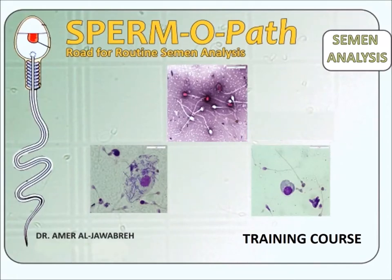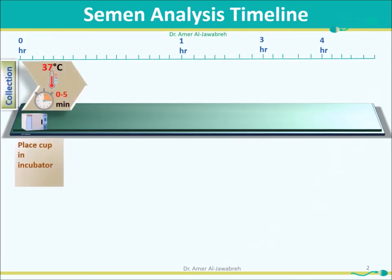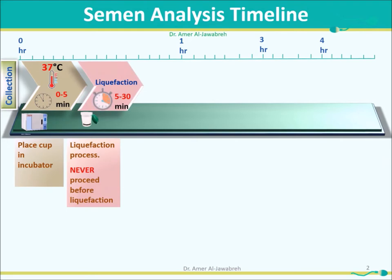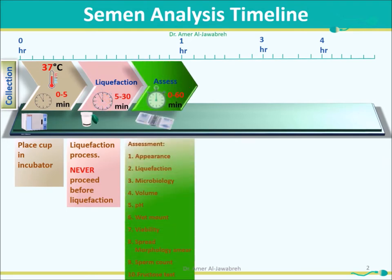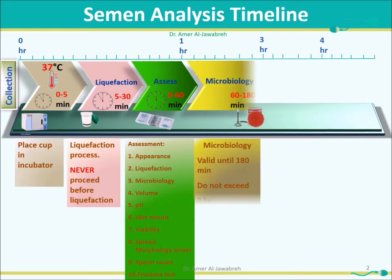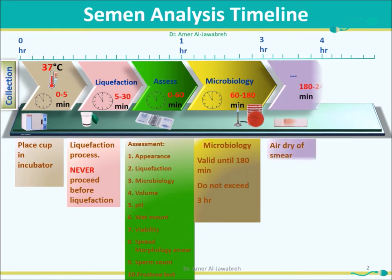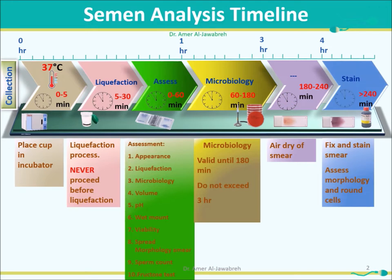Routine semen analysis involves motility assessment following a defined timeline. The process includes collection, placing the sample in an incubator, allowing liquefaction, then assessment of several parameters including microbiology, and preparation of a smear for morphology assessment.